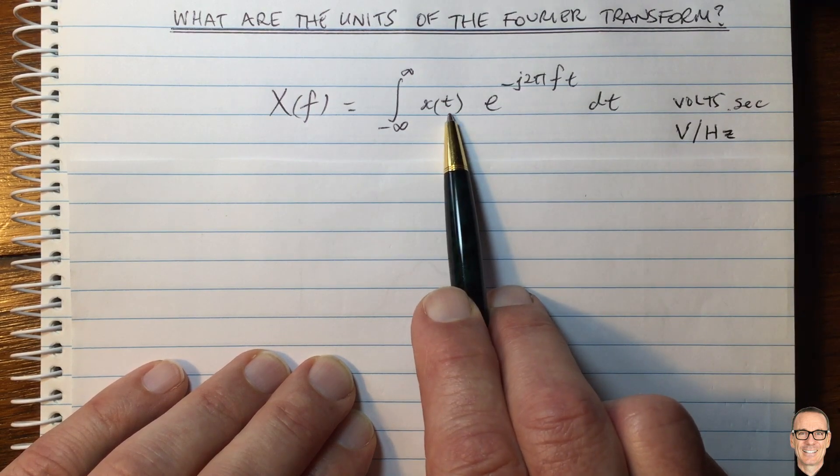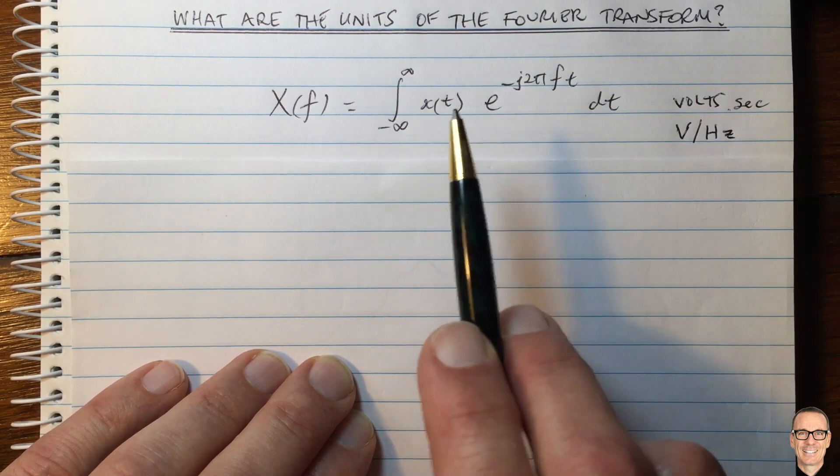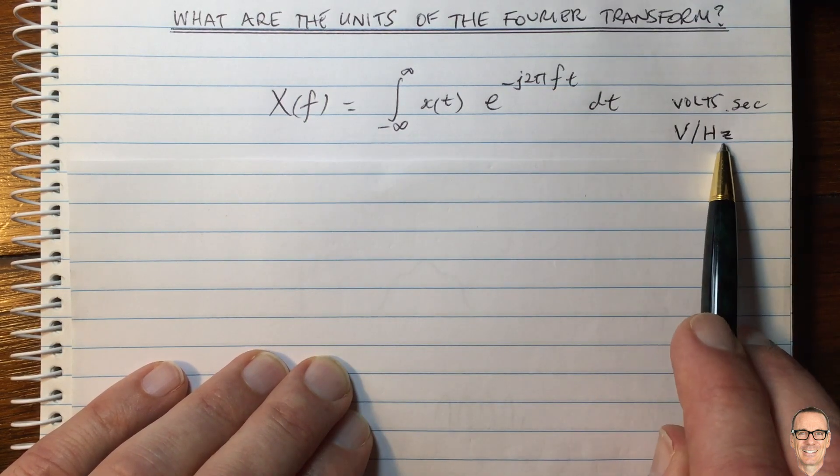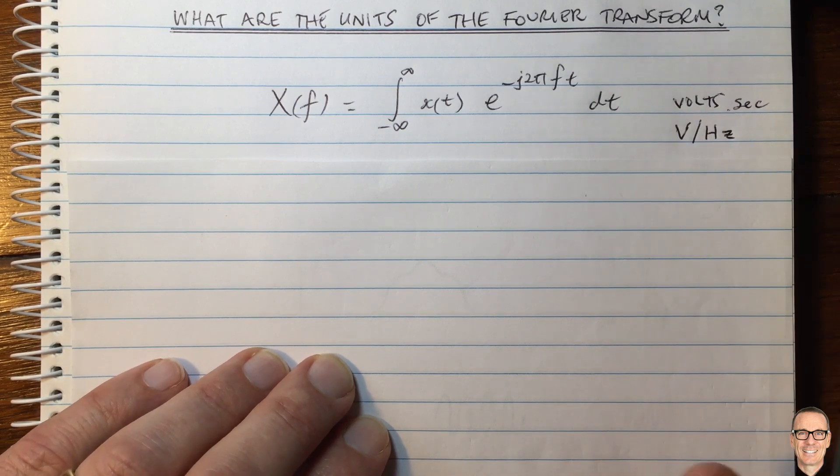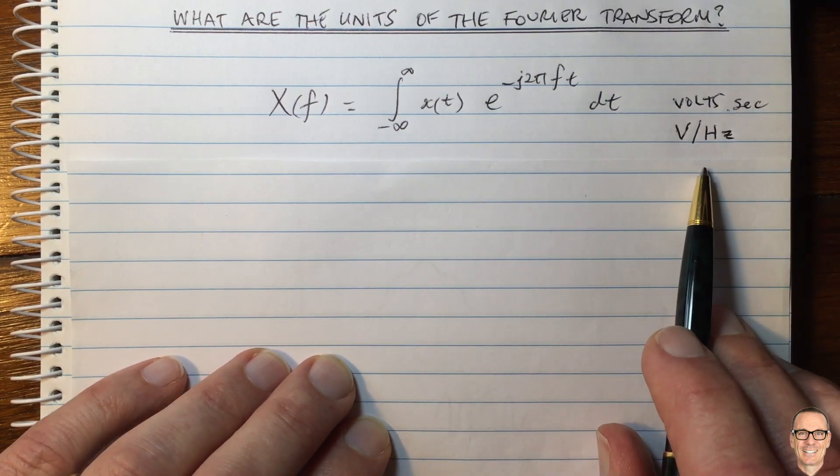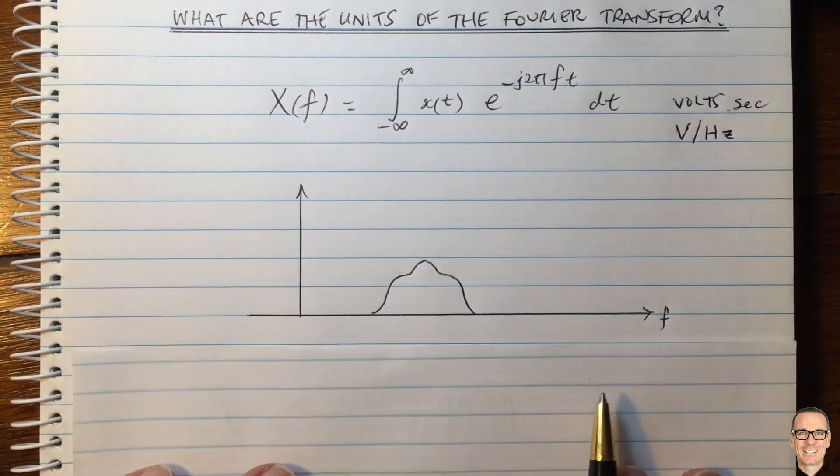The time domain signal was measured in volts in the time domain. But when we're looking in the frequency domain, it's volts per hertz. Why does it have to be this way? Why can't it just be volts? Why can't we have a definition where it's just volts? Well, let's look at an example here.